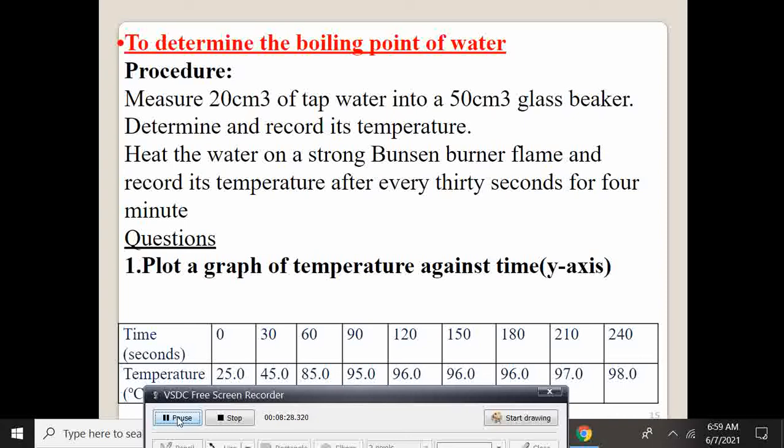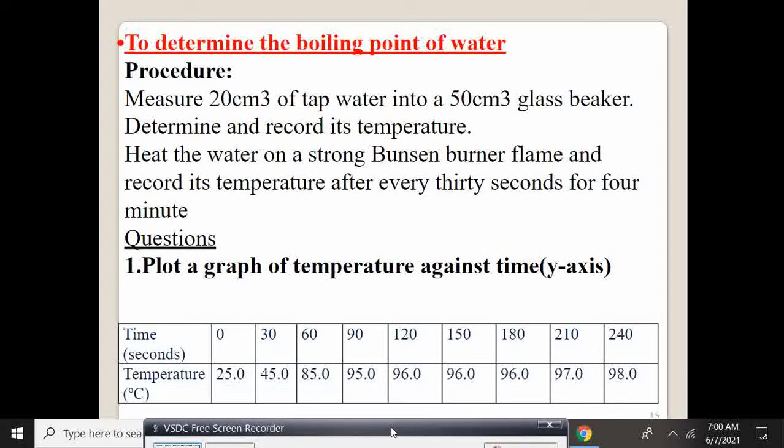Then plot a graph of temperature against time. When you look at the readings, 0 is 25, 30 is 45, 60 is 80. The reading is going up 96, 97, 98.